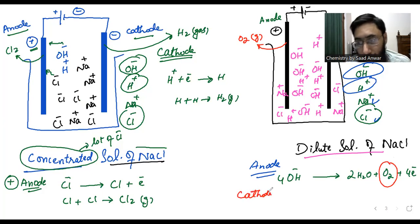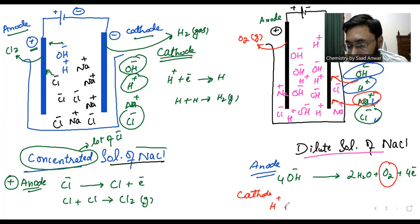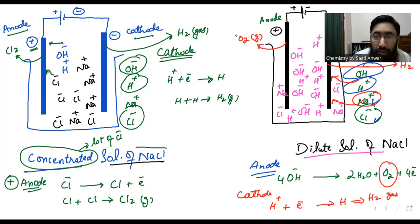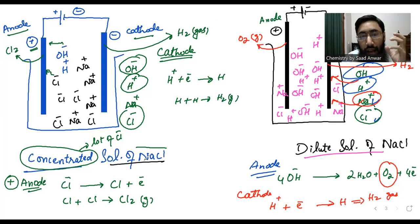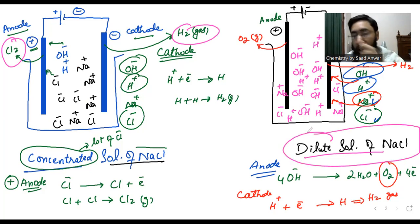What about the cathode in dilute NaCl? Sodium ions and hydrogen ions both want to move towards the cathode. Using the reactivity series, hydrogen ions will reach the cathode earlier. By gaining an electron, hydrogen ions are converted into hydrogen atoms, which combine to form hydrogen gas. So at cathode, the product is hydrogen gas. Summary: concentrated NaCl — anode gives chlorine gas, cathode gives hydrogen gas. Dilute NaCl — anode gives oxygen gas, cathode gives hydrogen gas.